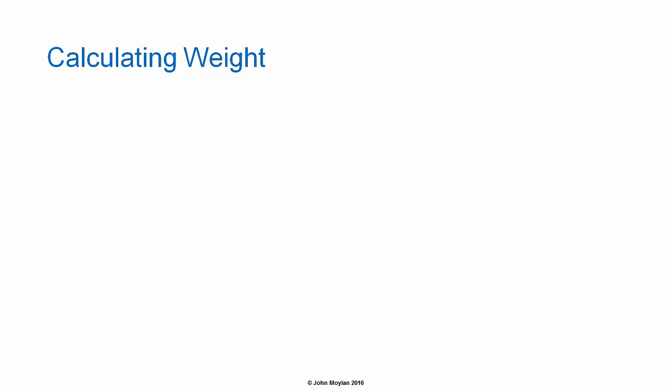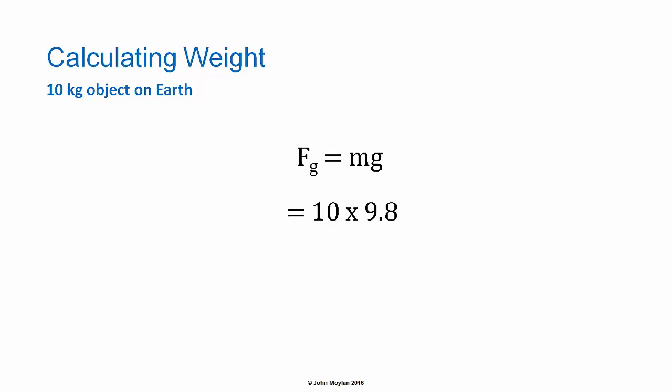Here are some worked examples of calculating the weight of an object. To calculate the weight of a 10 kilogram object on the surface of the Earth, we use the formula F subscript g equals mg — force due to gravity in newtons equals mass in kilograms multiplied by acceleration due to gravity in meters per second squared. With g equal to 9.8 meters per second squared, a 10 kilogram object has a weight of 98 newtons.